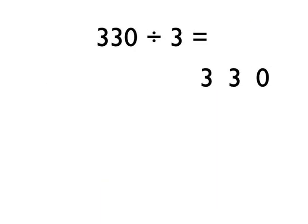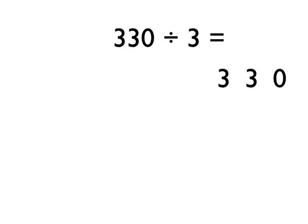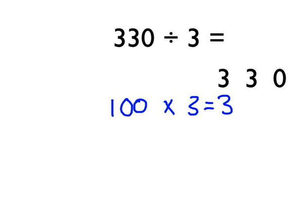Let's have a look at another example. We're going to do 330 divided by 3 using the chunking method. I start off thinking about 3 times tables I can do really quickly — 3 times 5, 3 times 10. I'm going to do 100 times 3 to get us started. 100 times 3 would be 300. Out of that 330, in the first 300 there are one hundred 3s. We lay out our workings like this and then do column subtraction.